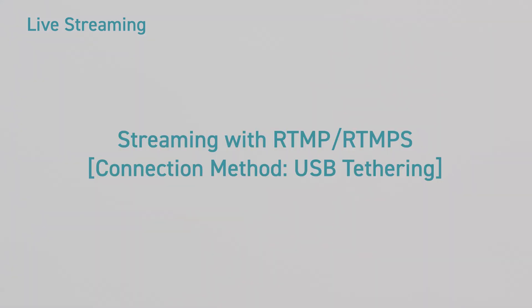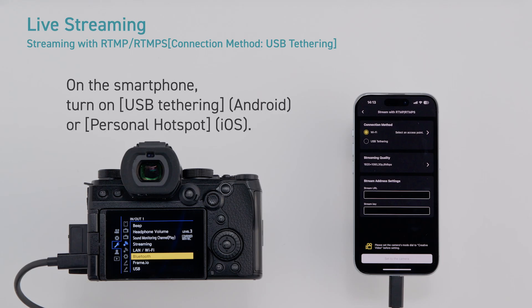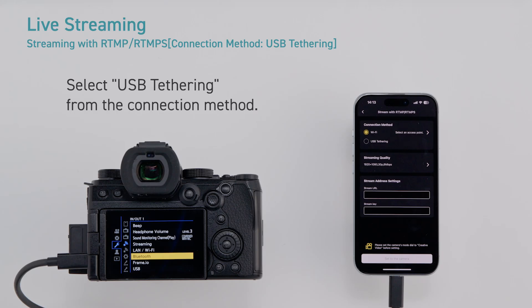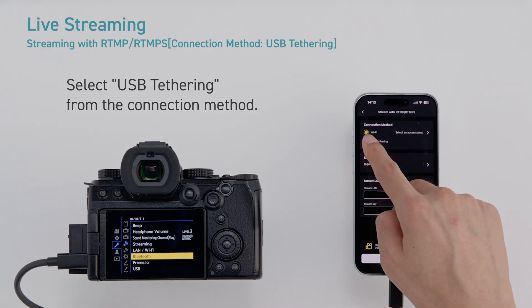Connection method USB tethering. Connect your smartphone and camera with a USB cable. On the smartphone, turn on USB tethering (Android) or personal hotspot (iOS). Select USB tethering from the connection method.